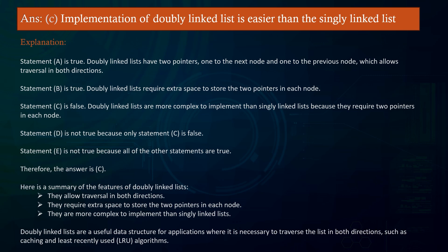Statement C is false — doubly linked lists are more complex to implement than singly linked lists because they require two pointers in each node. Therefore, the answer is C. Doubly linked lists allow traversal in both directions, require extra space, and are more complex to implement than singly linked lists. They are useful for applications requiring bidirectional traversal, such as caching and least recently used (LRU) algorithms.